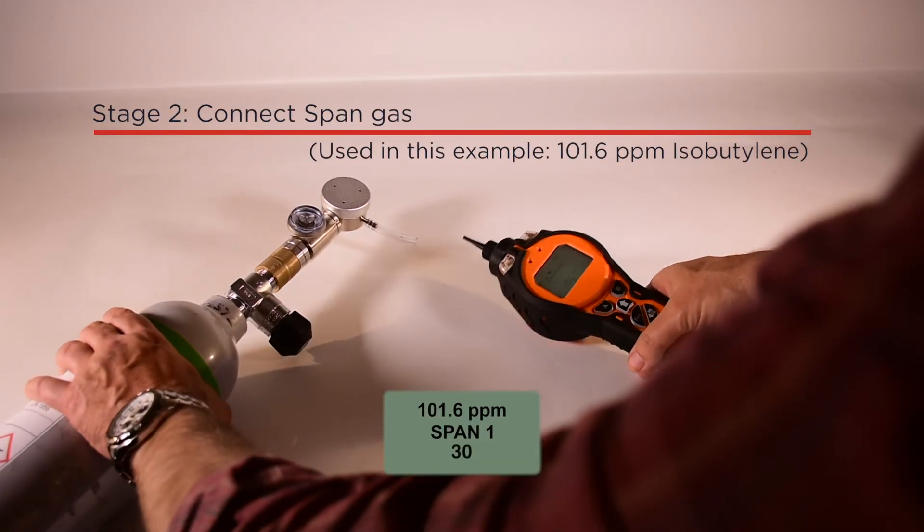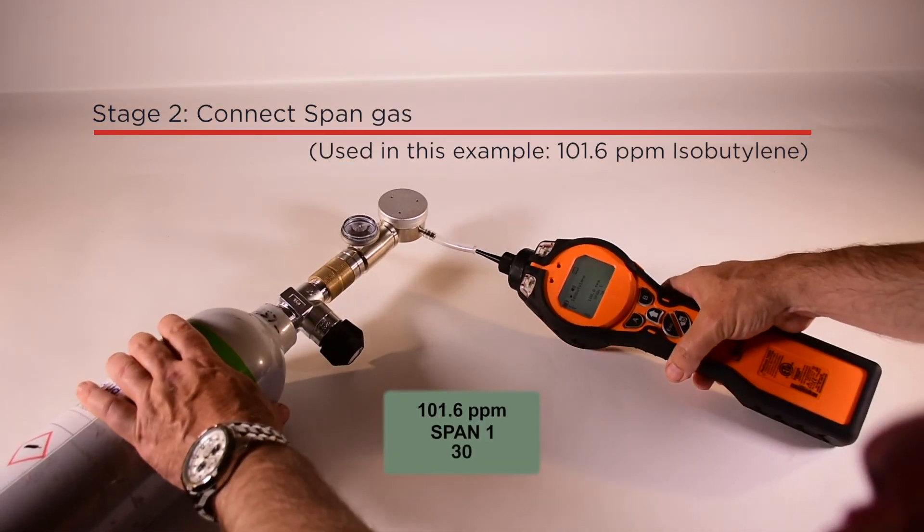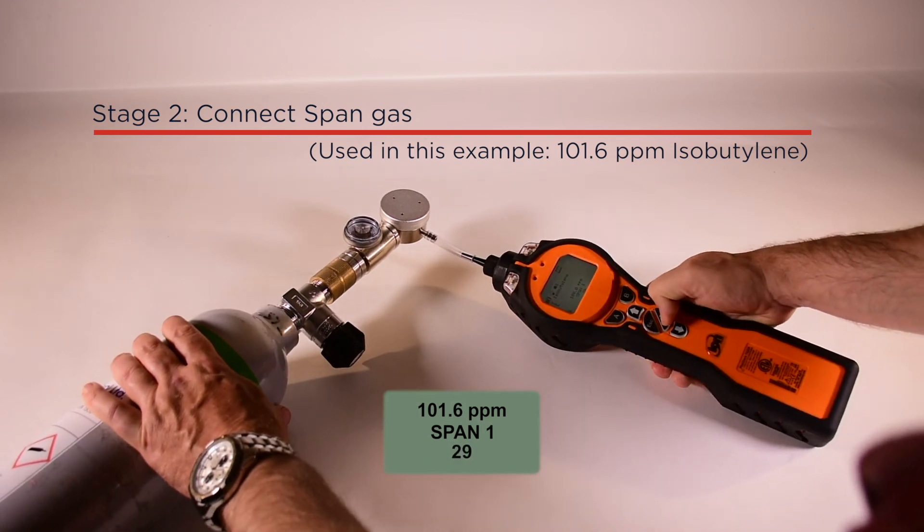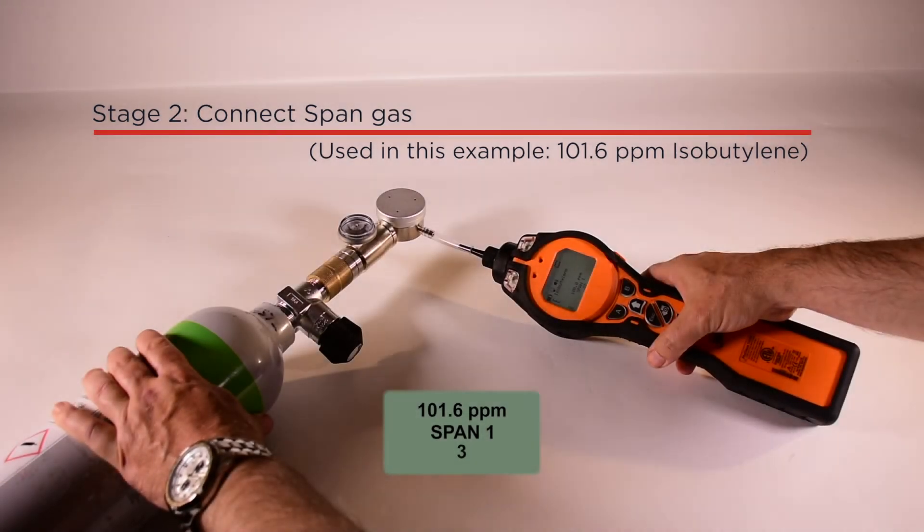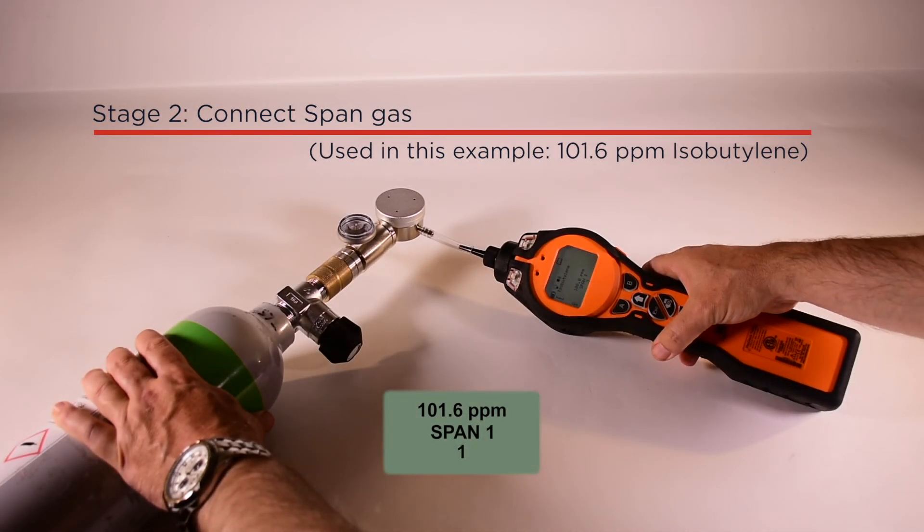The span 1 screen will appear. Connect your TIGER to the gas bottle and press enter. A 30-second timer will count down and then a check mark appears to indicate the span stage is complete. Now press enter.